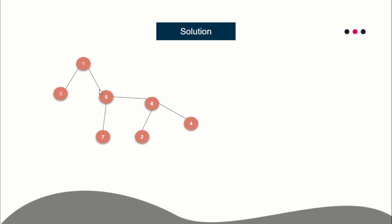A centroid is a node such that if you remove that node, the created connected components don't have size greater than n/2, where n is the size of the tree. For example, if you remove this node, this would form a connected component, this would form a separate connected component, and this would form a separate connected component. If you do not know about connected components, you can go through my graph algorithm series part one where I have explained that.